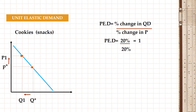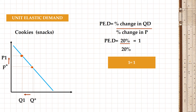What if the percentage change in quantity demanded is equal to the percentage change in price? That is called unit elastic demand. For unit elastic, there are no perfect examples, but generally the commodity is neither a necessity good nor a luxury good — it's something in between. For example, cookies, snacks, or chocolates usually fit this. The coefficient value is equal to one because the change will be the same at each point. If there is a 20% rise in prices of cookies, you will buy 20% less.